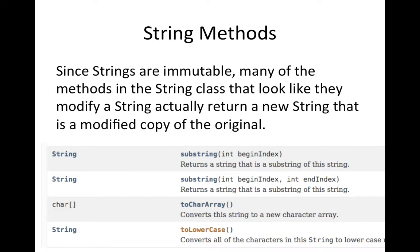Now that you understand that strings are immutable, that might make you wonder how the methods on a string object work. Because many of the methods that you might look at in a string class sound like they're going to change a string — for example, substring sounds like it's going to get rid of part of it, and toLowerCase sounds like it's going to change uppercase letters to lowercase. What's actually happening is that they're creating a new modified copy of the string and returning it. These methods return a new string object.